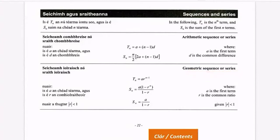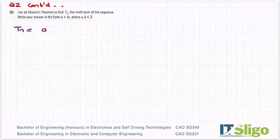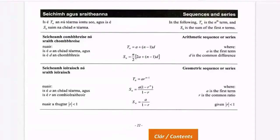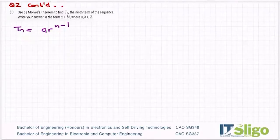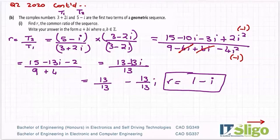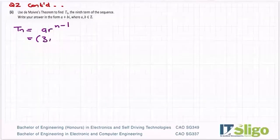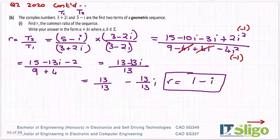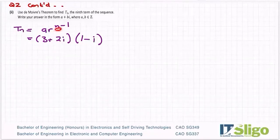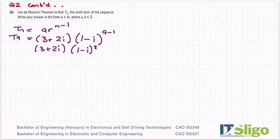From the log tables for a geometric series, we know Tn is the nth term. Tn equals a times r to the power of n minus 1. From the log tables, a is the first term and r is the common ratio. The first term in my sequence was 3 plus 2i, so this is 3 plus 2i. My r I just found, which is 1 minus i. And n is what term you're finding, so we want T9. So T9 equals 3 plus 2i times (1 minus i) to the power of 8.